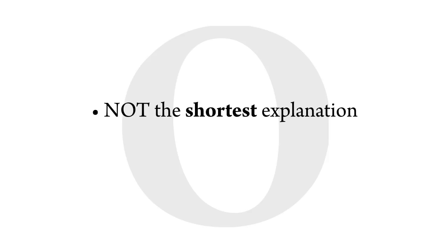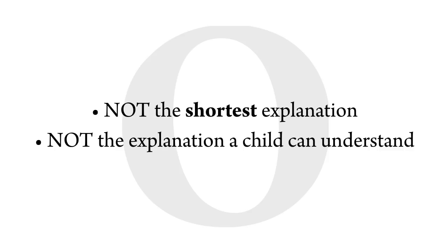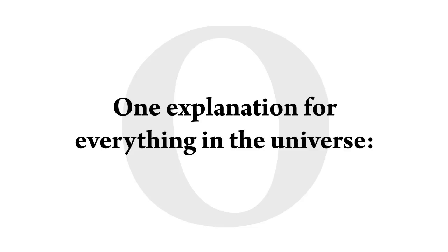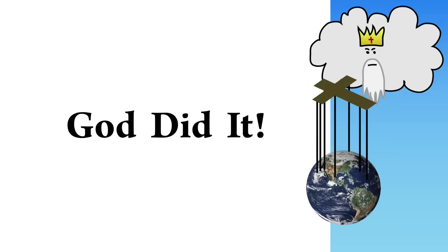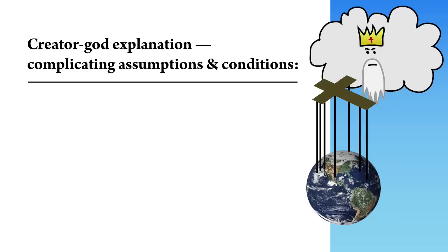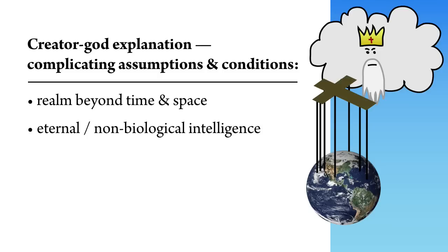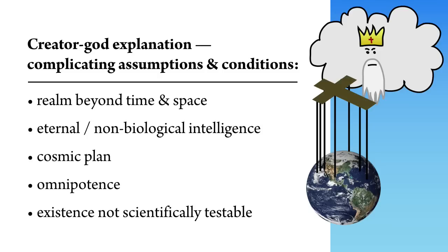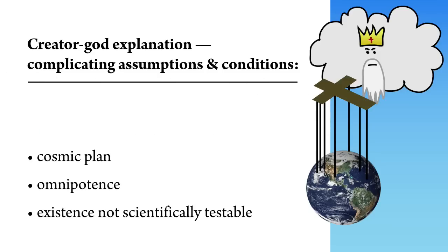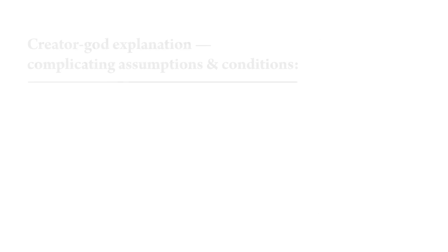It isn't about the shortest explanation or one that a child could grasp. One explanation for everything in the universe is just three words: God did it. But a creator God has many assumptions and conditions built in, and it's actually a very complicated explanation. Occam is about razoring away any unnecessary complications in favor of a simpler explanation.